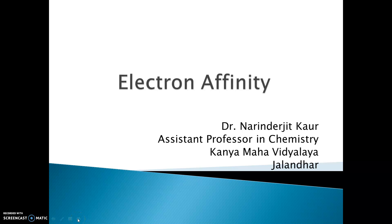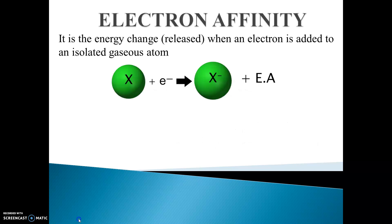Hello everyone, let's learn about electron affinity and its trends in the periodic table. As energy is required to remove an electron from an atom, energy is released when an electron is added to a neutral atom, and this energy is called electron affinity.